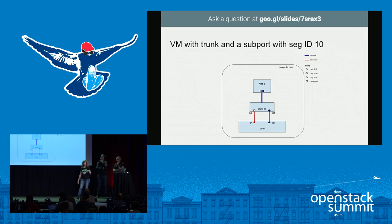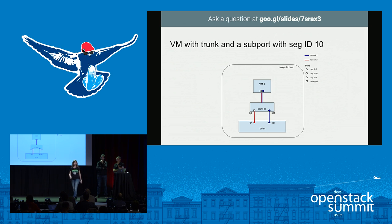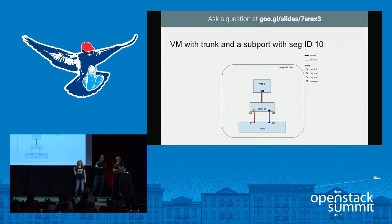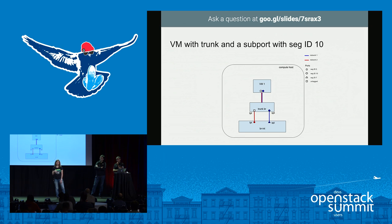When VM1 sends traffic tagged with segmentation ID 10, it goes through the subport (the blue diamond), then to the trunk bridge. There we have patch port SPT, tagged with segmentation ID 10, and it flows to its pair SPI. At SPI, it's tagged with a different tag — segmentation ID 7 — because 7 is the local VLAN ID that the OVS agent uses for network 1.